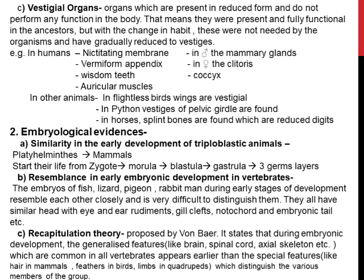Let us go into the next category of evidences: the embryological evidences. We have finished with the morphological evidences and will now deal with embryological evidences. The first point under embryological evidences is similarity in early development of triploblastic animals. Embryological — everything is related to early development. Triploblastic means having three germ layers.